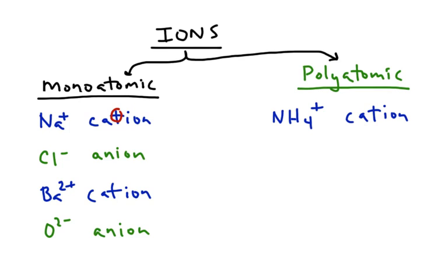An example of an anion would be something like nitrate, which has the formula NO3-. And that's an example of a polyatomic anion. And there are lots of other examples, so I'd encourage you to check out the back of the periodic table that I gave you.